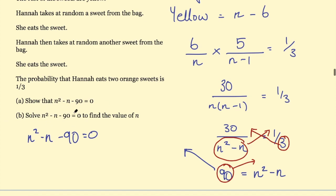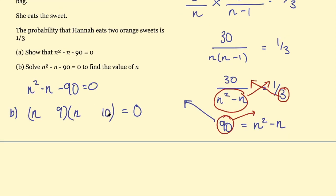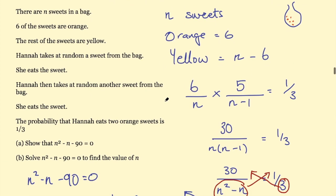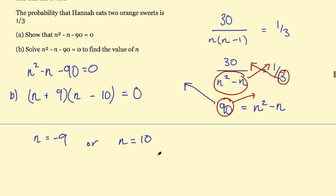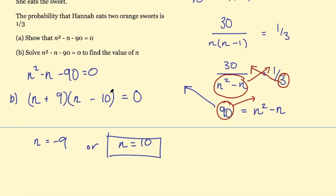Part b is simply factorizing the quadratic. We need two factors of 90 with a difference of one — nine times ten is 90, so using factors 9 and 10: minus 10 plus 9 gives minus 1, and 9 times minus 10 gives minus 90. So the factorization gives n equals minus 9 or n equals 10. We can't have negative 9 sweets, so n must equal 10 — there were 10 sweets in the bag.